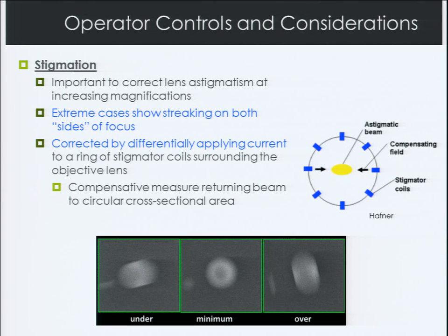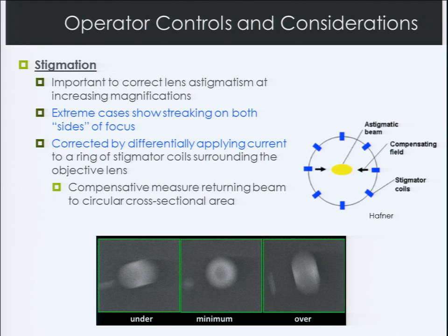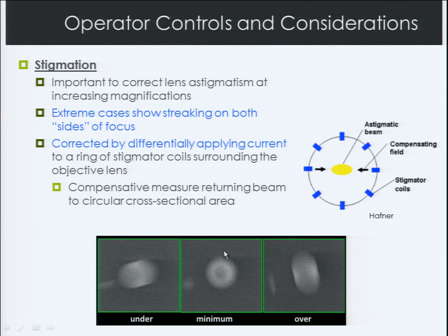Stigmation correction is an important operator control, especially at increasing magnifications. In extreme cases of stigmation, you'll see streaking on both sides of focus — over or under-focused images will appear elongated. To correct this, we differentially apply current to stigmator coils surrounding the objective lens, which warp the beam back to a circular or cylindrical shape, giving us a circular cross-sectional area and the truest depiction of our sample.